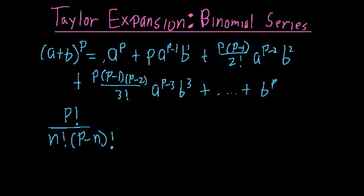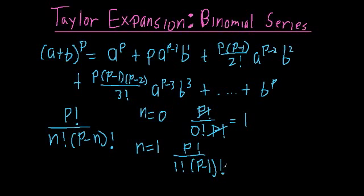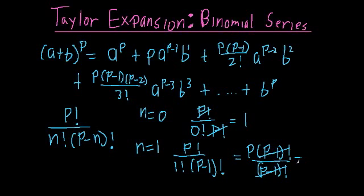To show how we get these coefficients from this formula: for n equals zero, the coefficient is p factorial divided by zero factorial times p factorial, which simplifies to one since zero factorial is one and the p factorials cancel. For n equals one, the coefficient is p factorial over one factorial times (p minus 1) factorial. Rewriting p factorial as p times (p minus 1) factorial, the (p minus 1) factorials cancel and we're left with p.